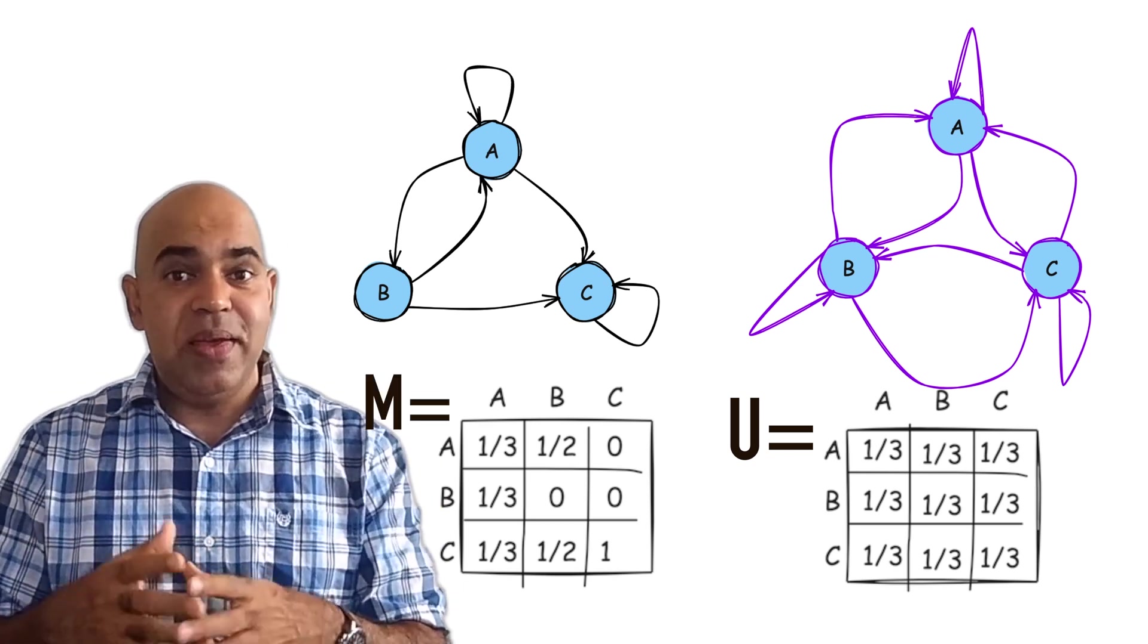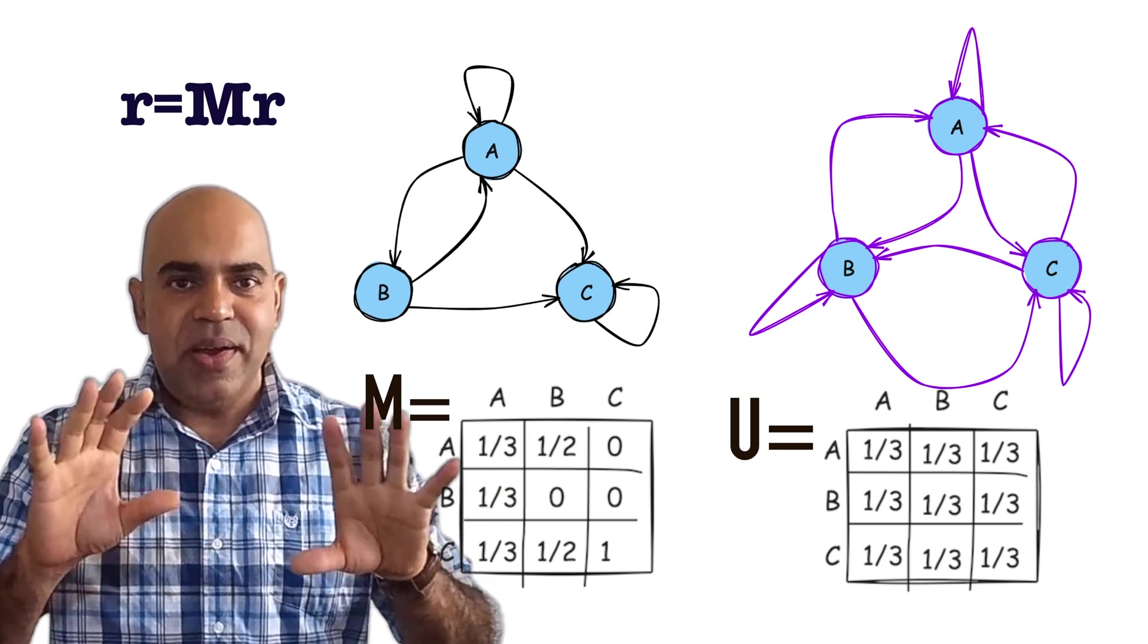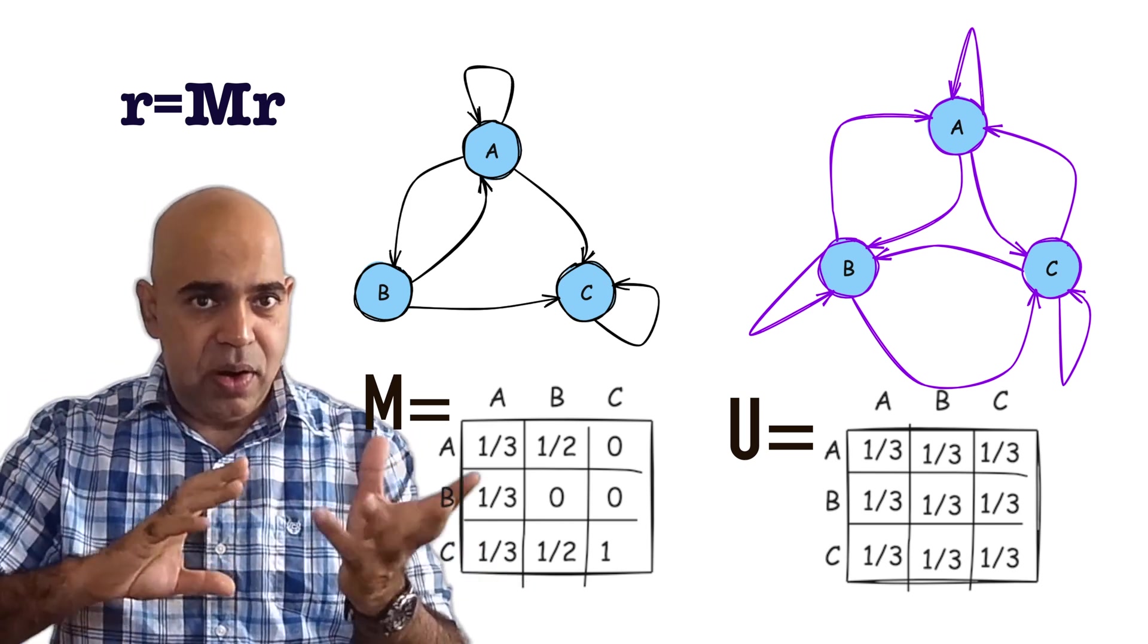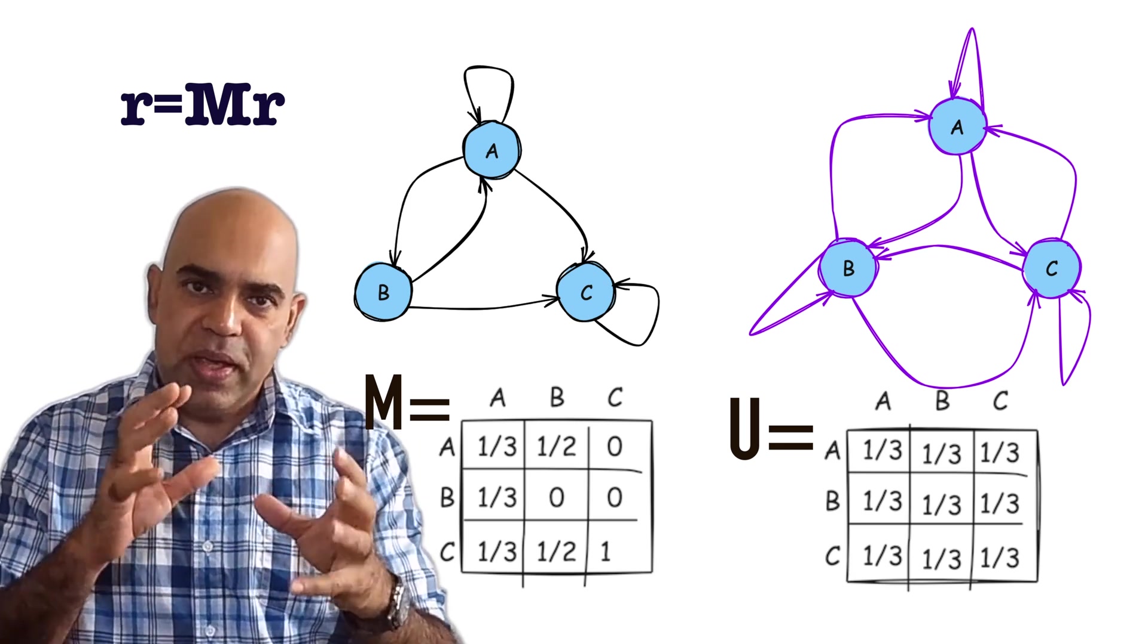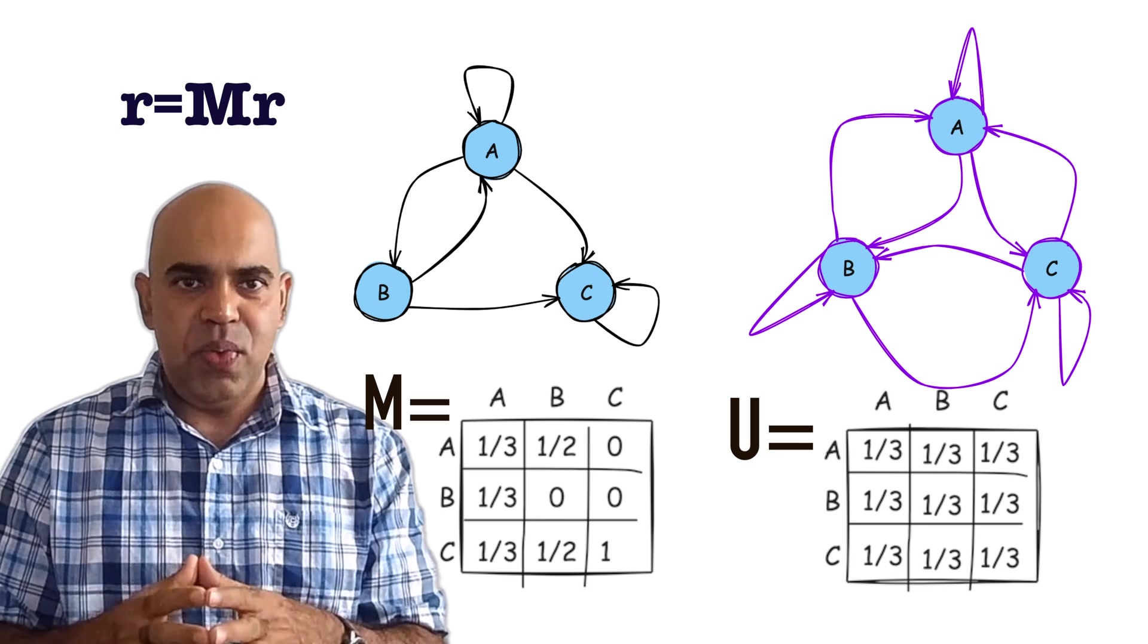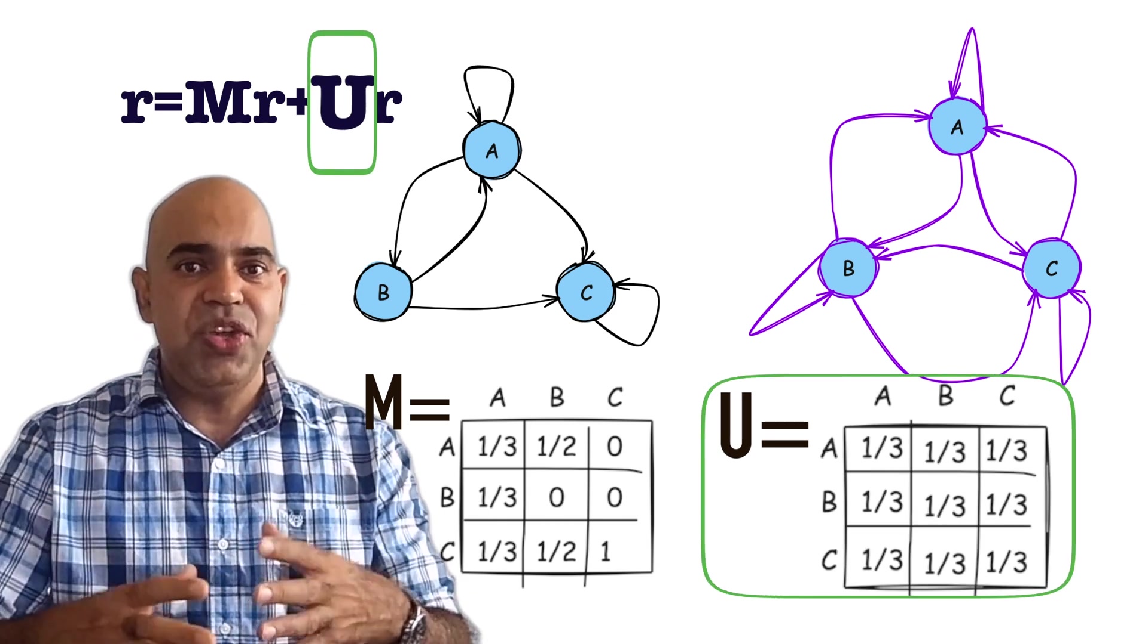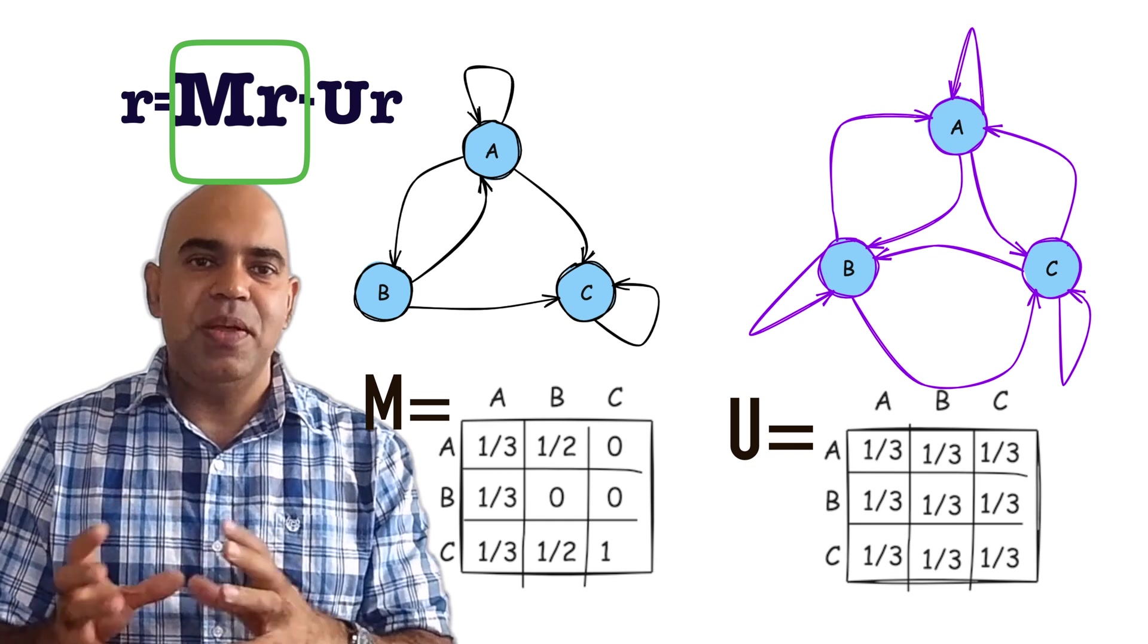Our PageRank formula that was vulnerable to the spider trap issue had this formula: R equals M times R, where R is the rank vector and M is the transition matrix for the hyperlinked internet network. Now that we have another matrix U, we should include it in the formula. Let's include it in an additive form: R equals M times R plus U times R.